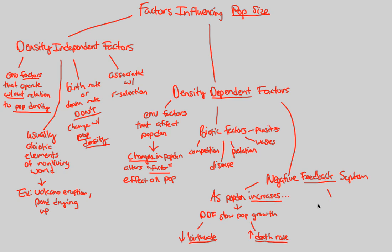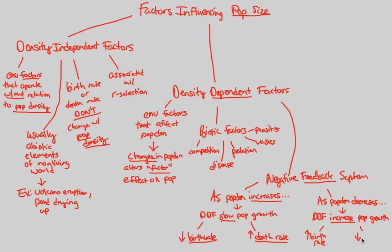Conversely, as population density decreases, the DDFs will actually increase population growth. They will increase the birth rate and decrease the death rate, working to bring the population back up. This bidirectional response is what characterizes the negative feedback mechanism.